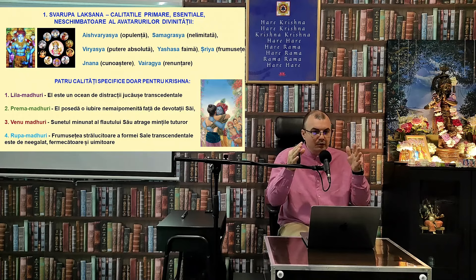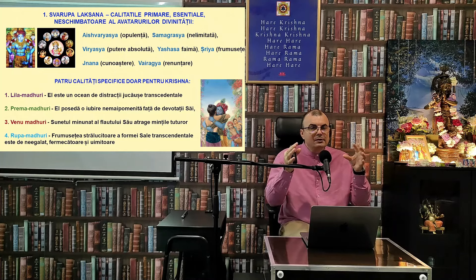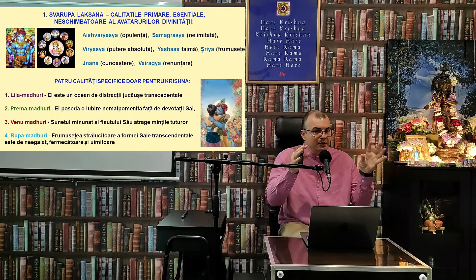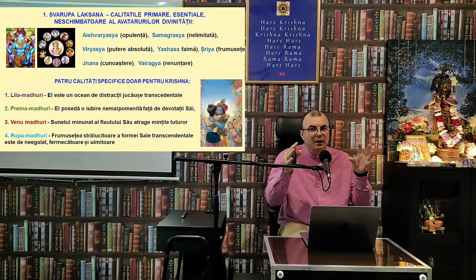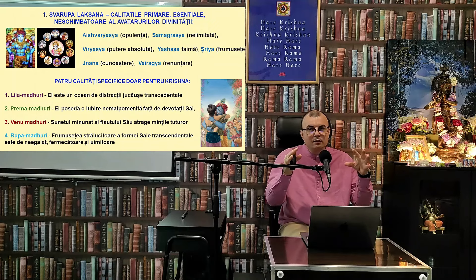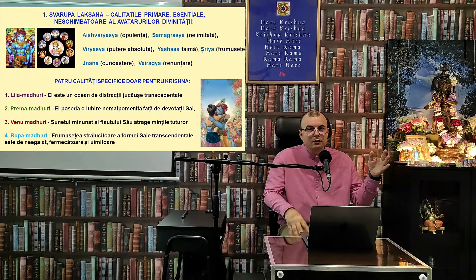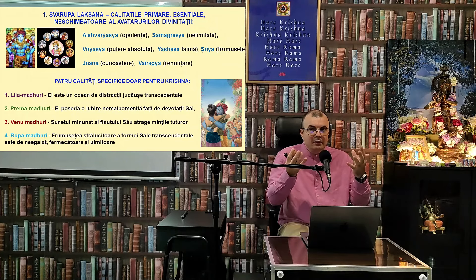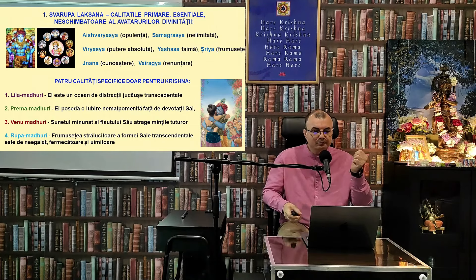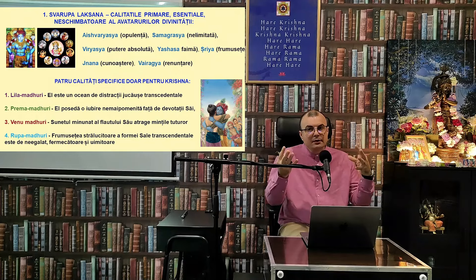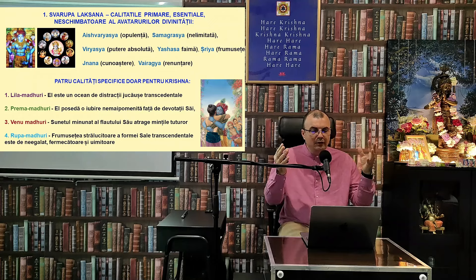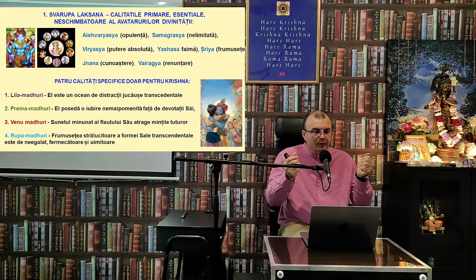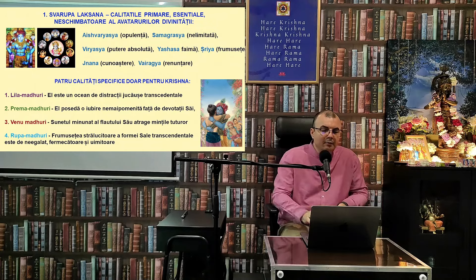Cineva poate să aibă o parte din aceste calități, dar nu 100% — pentru că El, Divinitatea Supremă, este singura personalitate care le posedă 100%. De exemplu, un coleg care are 20% de gyana, înțelepciune, și 80% de vairagya — el este foarte renunțat, întotdeauna zen — și noi suntem atrași. Sau persoanele extrem de frumoase sau foarte faimoase, foarte înțelepte — gravităm spre acele persoane care posedă aceste calități.